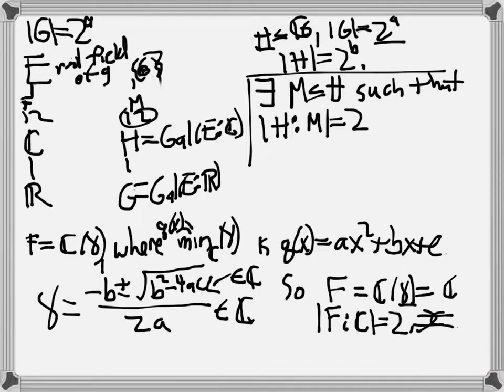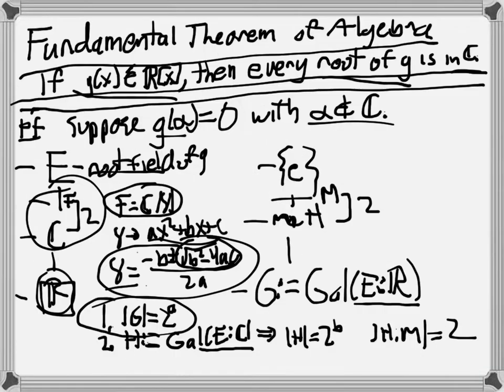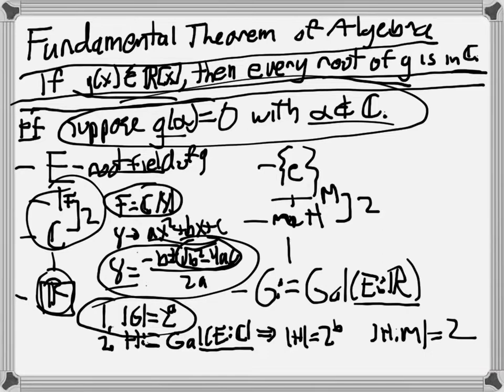The contradiction arises because everything on this page is fine — the problem is that it contradicts the fact that we supposed we had a root alpha not in C. That means that for any polynomial g, every root has to be in C, or else we get a contradiction. And that's the fundamental theorem of algebra, and now we're done.